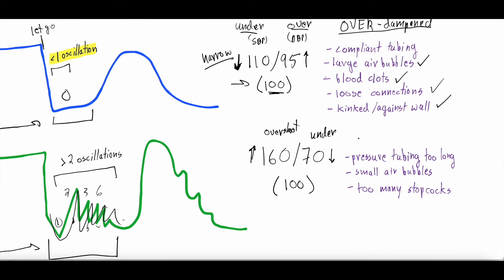For under-dampening — not enough dampening, too many oscillations — you get systolic overshoot and diastolic undershoot. Causes include tubing that is too long (a saline column that's too long leads to under-dampening), small air bubbles, and too many connections or stopcocks. The common theme is anything that makes the circuit too long. Fixes: remove any extra tubing from the circuit, eliminate air bubbles, and take out any additional stopcocks.